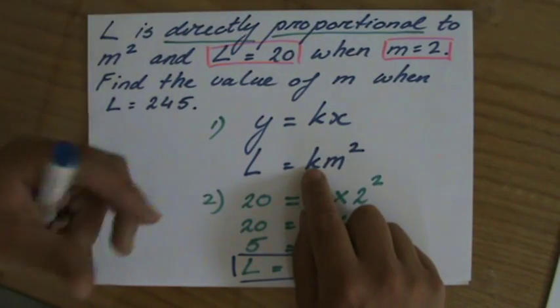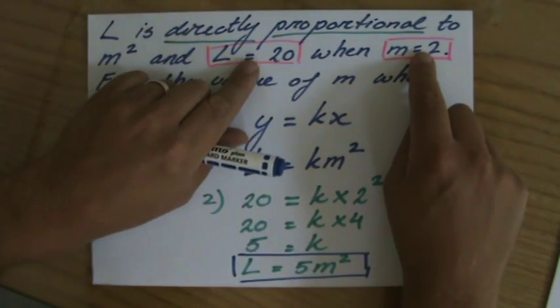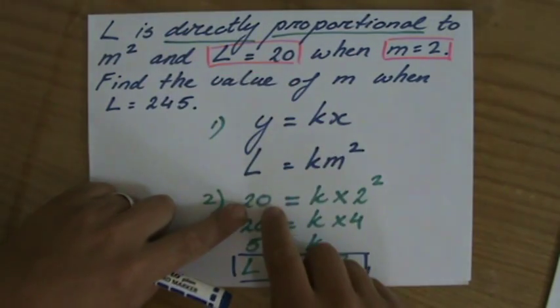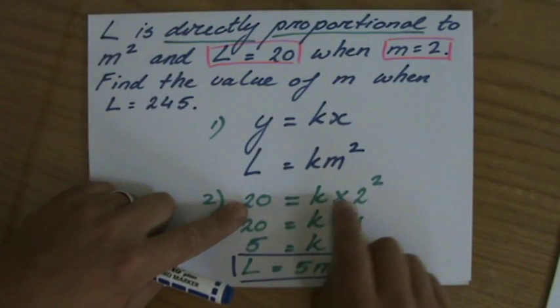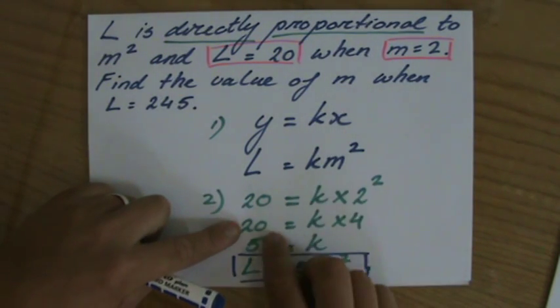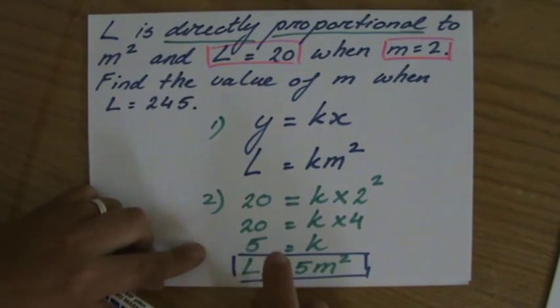L equals constant times m to the power 2. They'll give me two values because you know that you have to find that constant. Yeah? L equals 20, M equals 2. 20 equals k times 2 to the power 2. 20 equals 4k. That means that k equals 5.